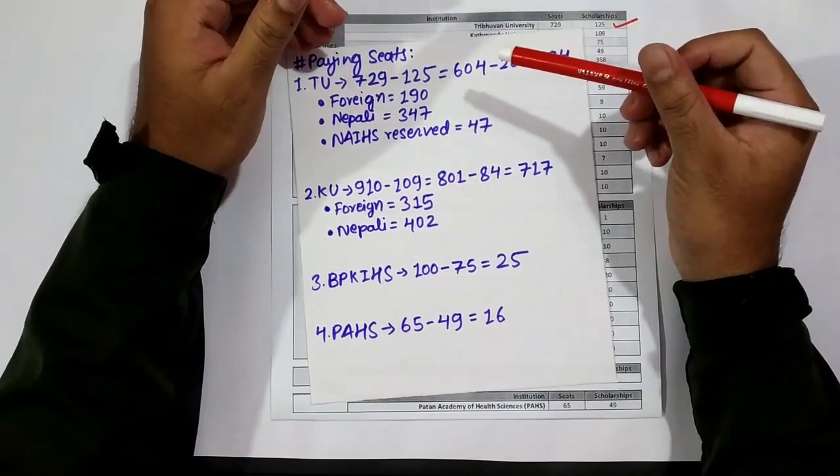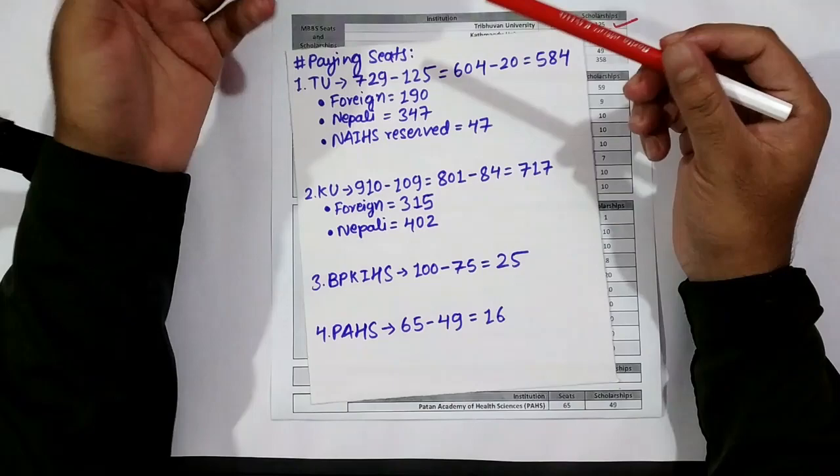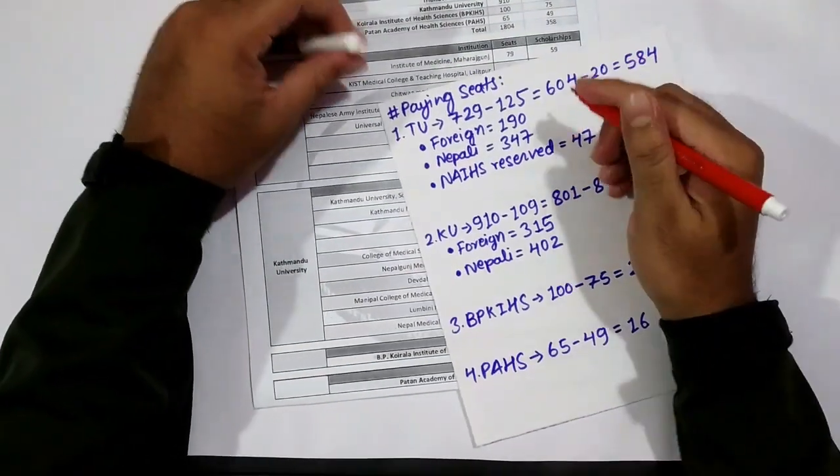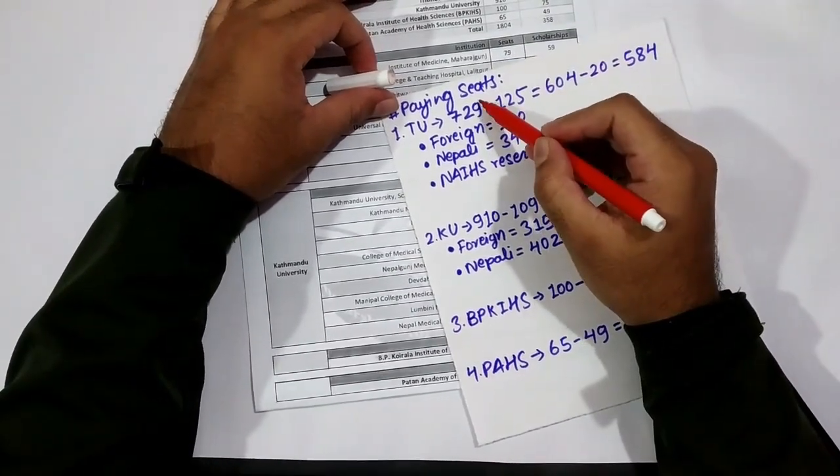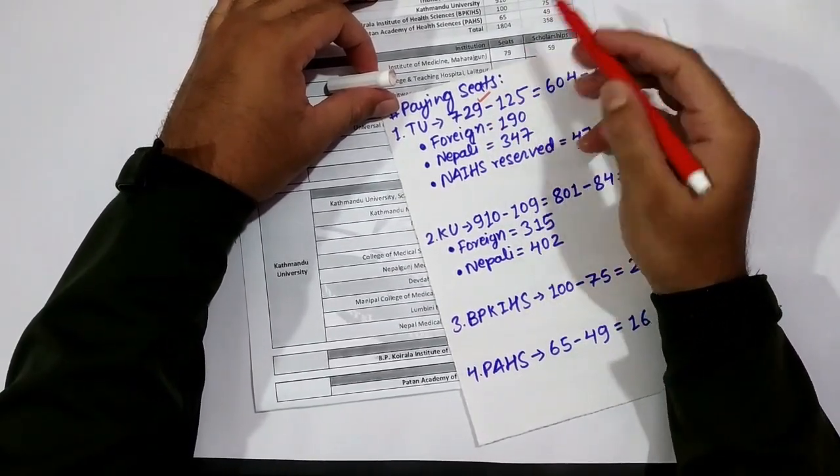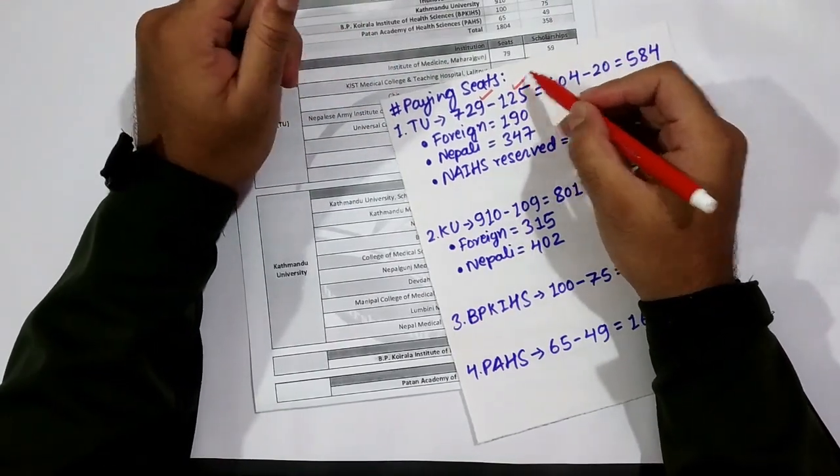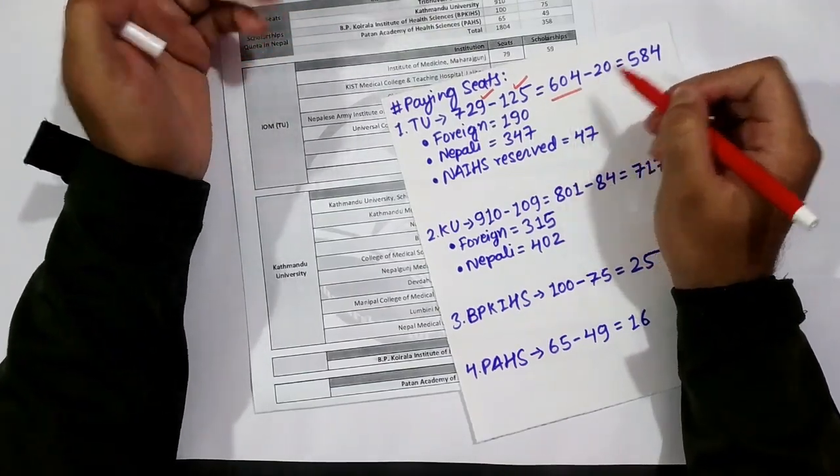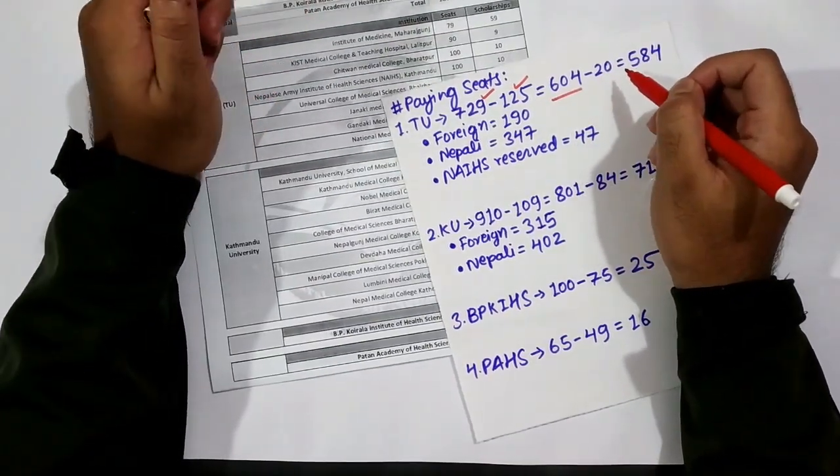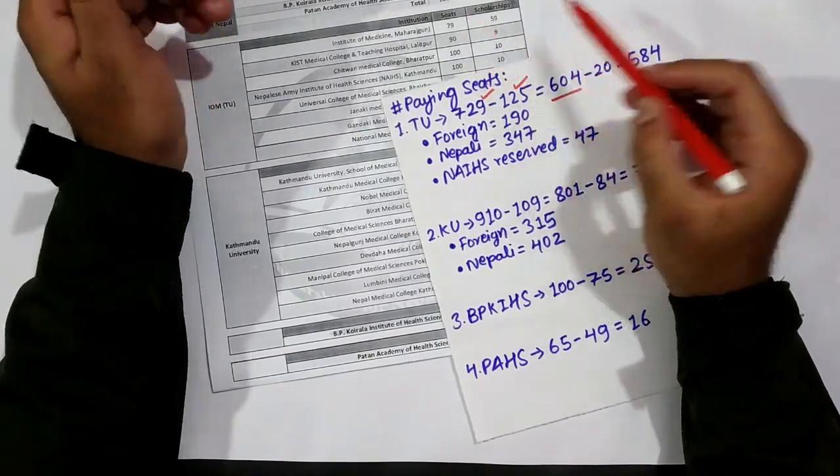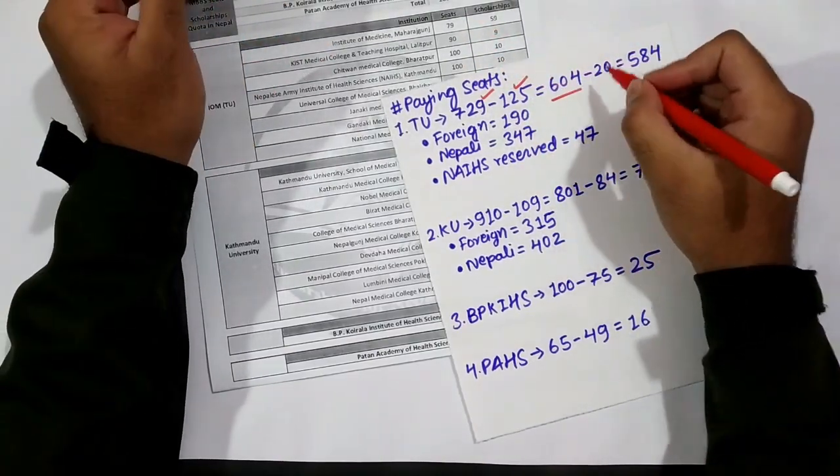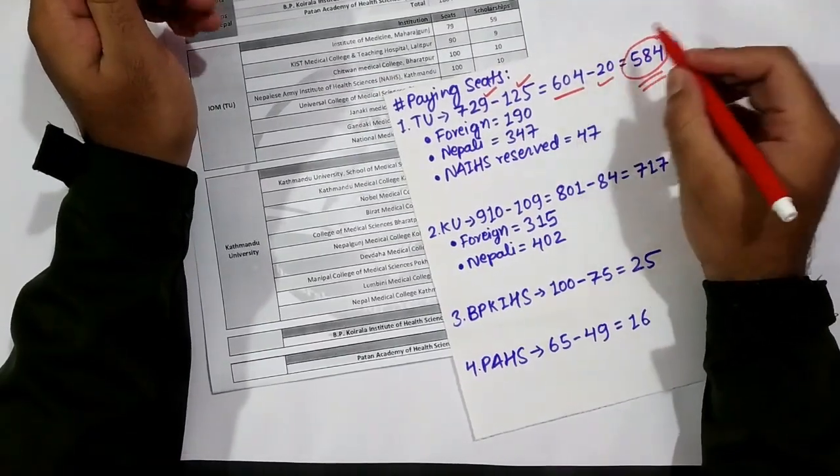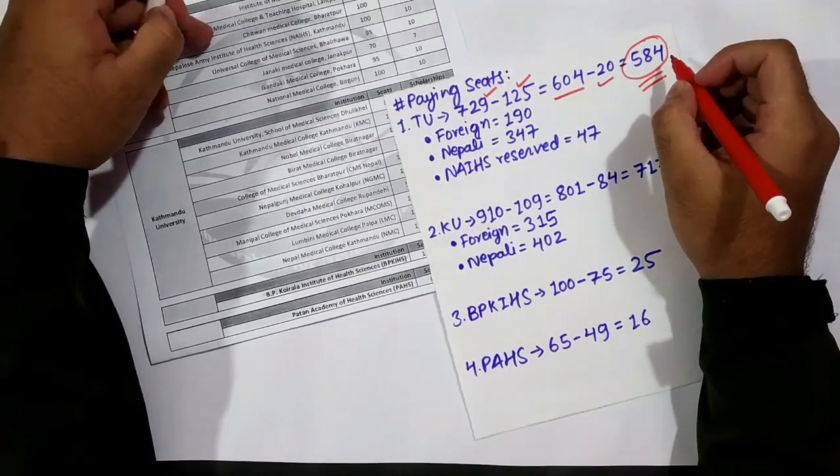Let's look at our paying category. This is also unofficial information from trusted sources. If we consider this, out of 729 total seats, if we deduct the scholarship seats for TU (125), we get 604 total paying seats. If we deduct the paying seats from the main campus IOM, we get 584 paying seats under TU affiliated colleges.